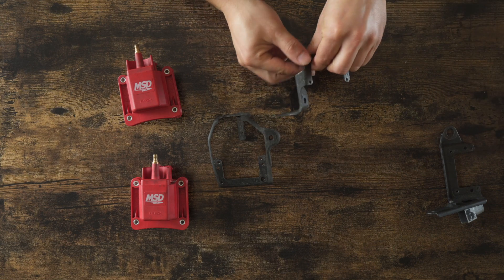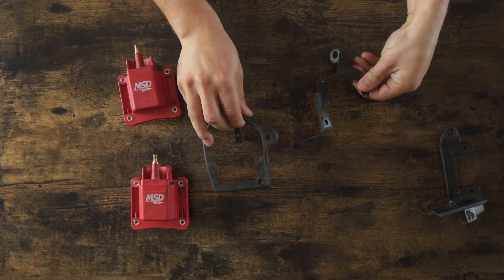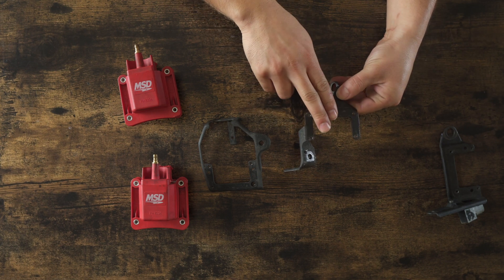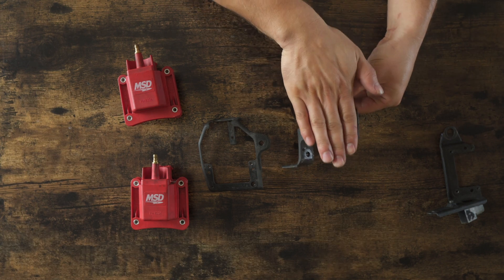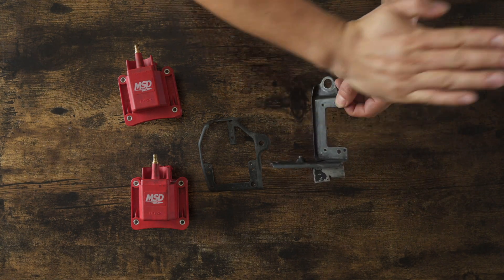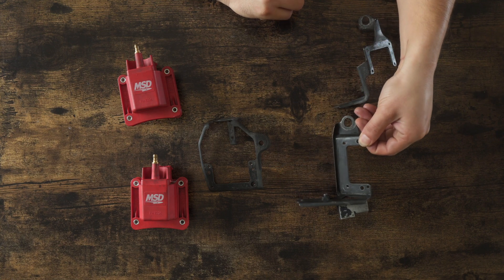For the second generation kit, again, this is still on the passenger side, but the bracket actually changes for the second generation. The coil on the second generation is going to point the ignition coil this way, and on the first generation, it's actually going to be standing up just like that.